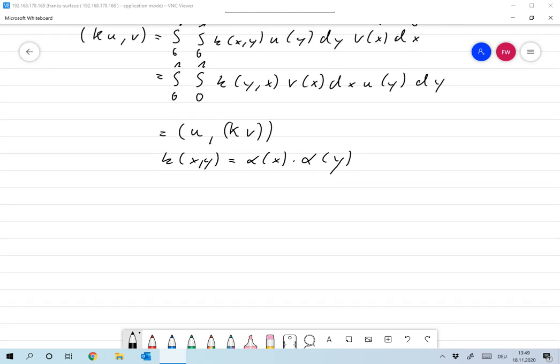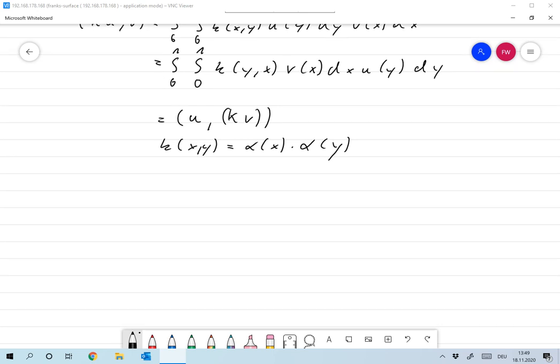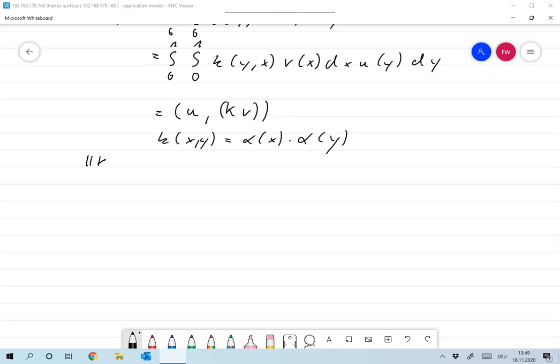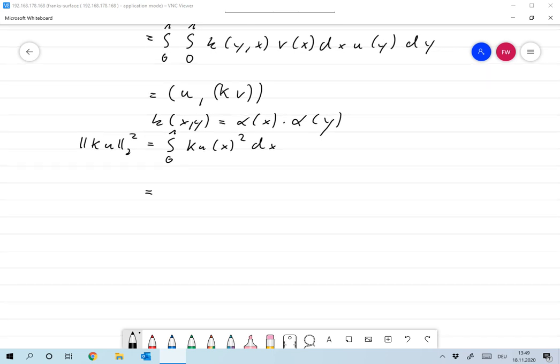Now, yeah, let me compute the norm of that operator. The norm of Ku for any u in L², two norm squared, is given as the integral from 0 to 1, |Ku(x)|² dx.